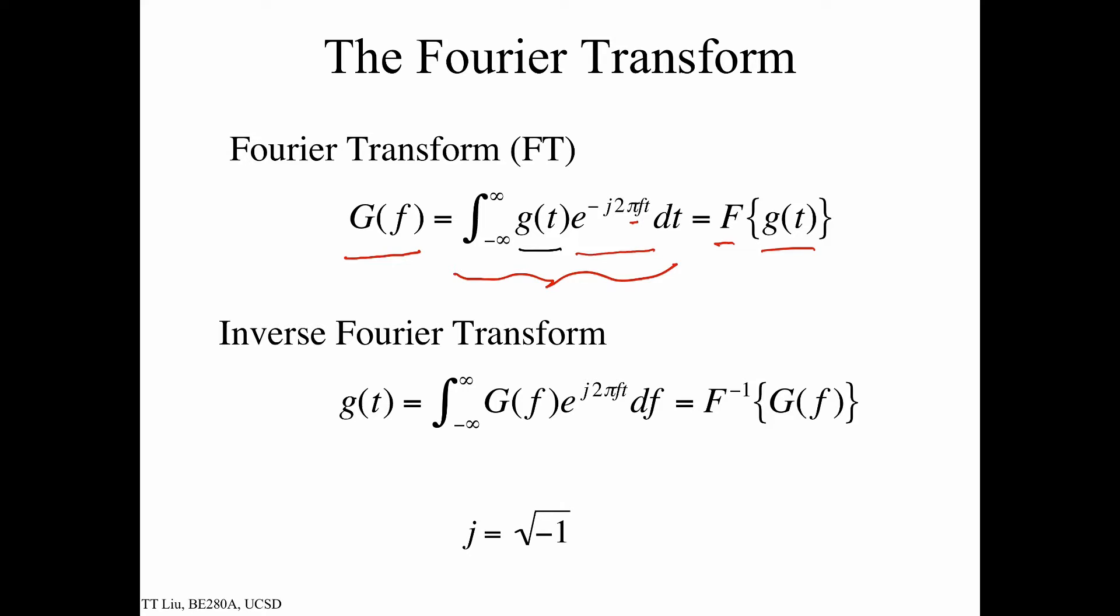Now, under certain circumstances, and certainly all the functions we're going to look at in this course, we can do the inverse Fourier transform. This means we can take G(f), multiply it by a complex exponential which has essentially the same form as the initial complex exponential except there's no minus sign. We integrate over frequencies, and we then get back our original function g(t). That's denoted as the inverse Fourier transform of G(f).